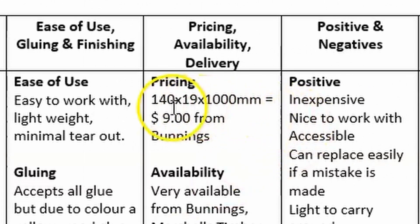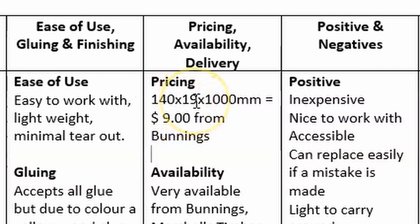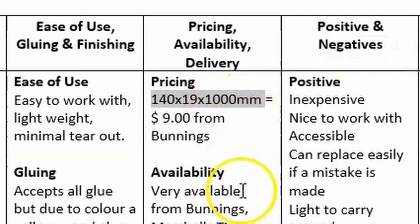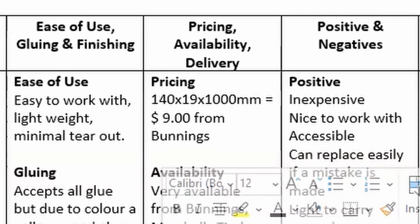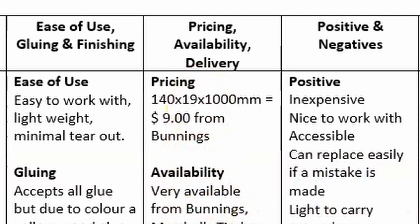For pricing, a lot of students make the mistake of using different dimensions for different timbers — 140 by 19 for pine, 70 by 19 for Merbau — or some even use cubic metres. We never buy timber in cubic metres, so make sure all prices are quoted at 140 by 19 by 1 metre. You don't have to quote from multiple places; just go to one supplier consistently — for example Bunnings, or if ordering from Armour Timber use those prices. Get all prices from one company.